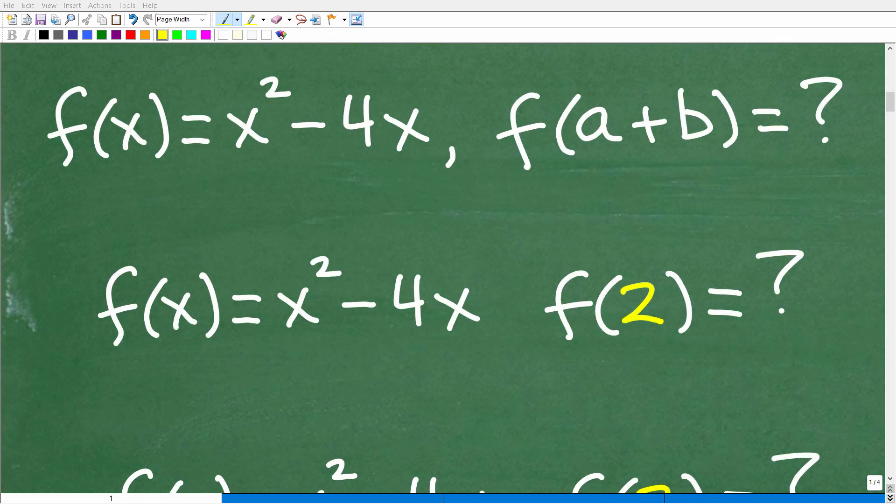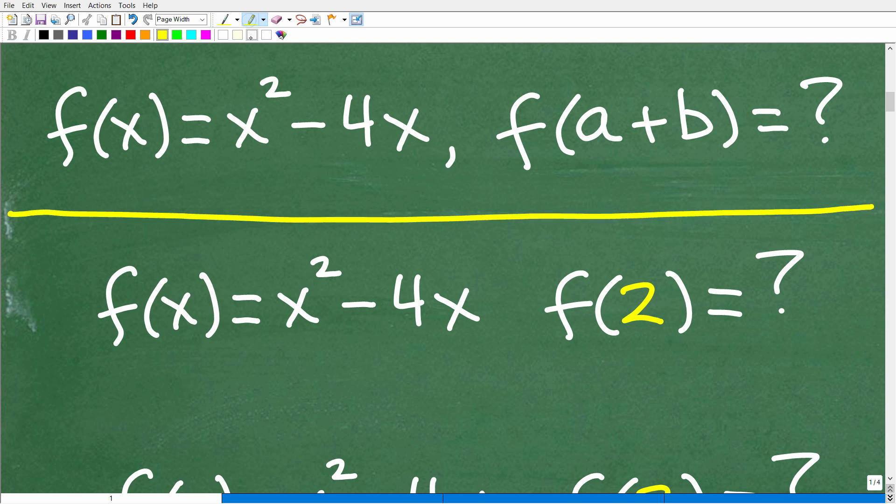So the first step in solving this problem is to make sure you actually understand what it means to evaluate a function. Here is our function here. We have f(x) = x² - 4x, and we want to evaluate this function for f(a + b).